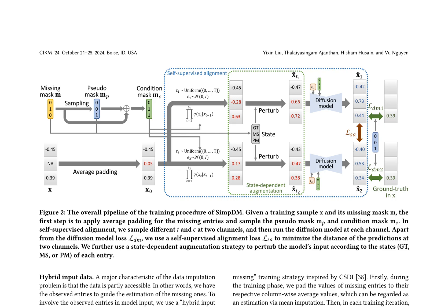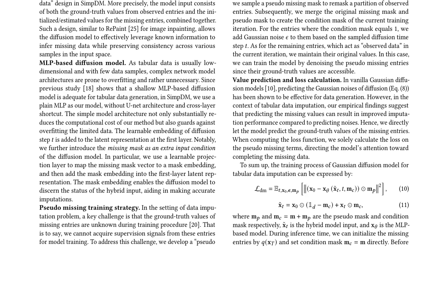The pseudomissing training strategy is employed, involving padding missing entries with column-wise average values during training, sampling pseudomissing masks, and adding Gaussian noise to entries where the condition mask equals 1. The model directly predicts the missing values and calculates the loss on pseudomissing terms.